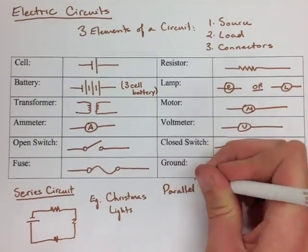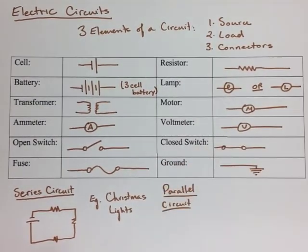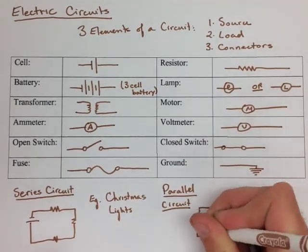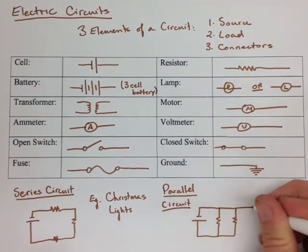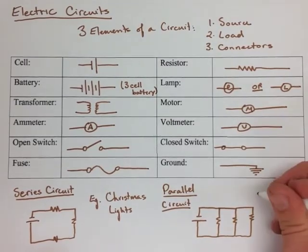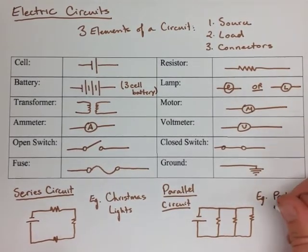Now the other type of circuit is a parallel circuit where the circuit has more than one path, or two or three paths. Examples of this is pretty much anything else.